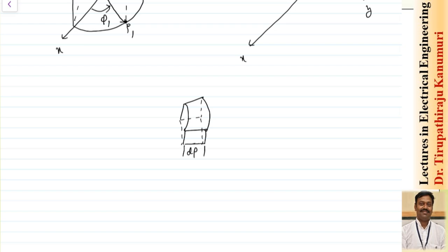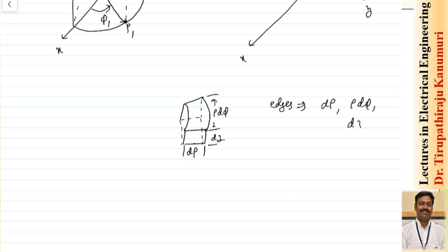The three differential edge lengths are: d_rho (radial change), d_z (axial change), and rho·d_phi (arc length for angular change d_phi). These are the differential lengths in the cylindrical coordinate system.